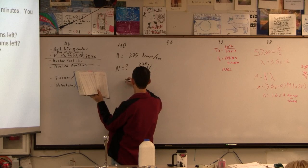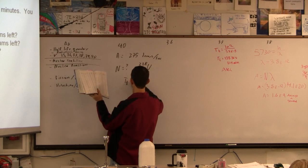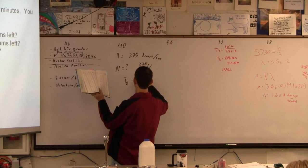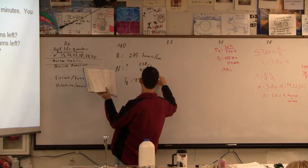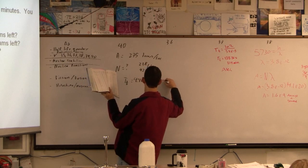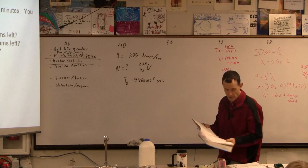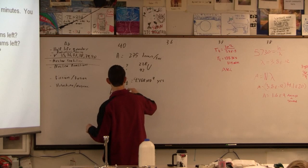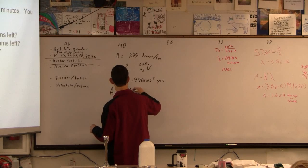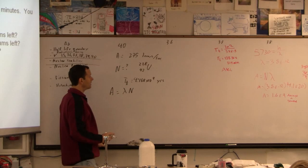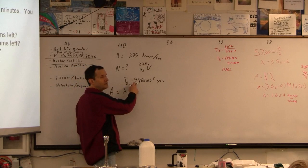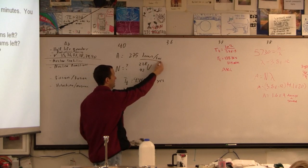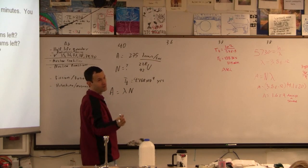So that's all we need to know is that the half-life is 4.468 times 10 to the 9th years. And then I believe what we can use is the notion that activity is lambda N. Now here's the problem, can we keep this in years for this? No, because this is decays per second.